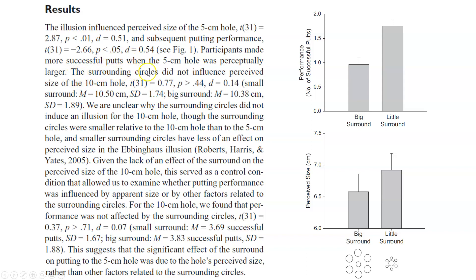The surrounding circles did not influence the perceived size of the 10 centimeter hole: t = 0.77, p > 0.44, d = 0.14. So remember — sometimes they putted to a 5 centimeter hole and sometimes to a 10 centimeter hole. The Ebbinghaus illusion didn't work for the bigger hole, with means and standard deviations given for both small and large surround conditions.